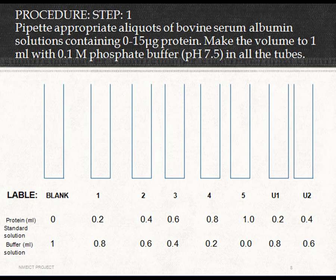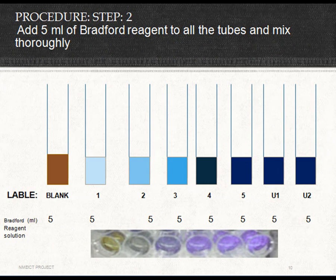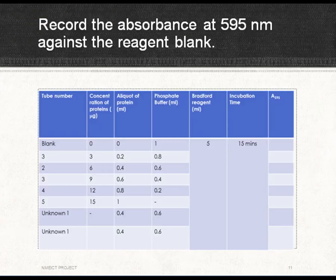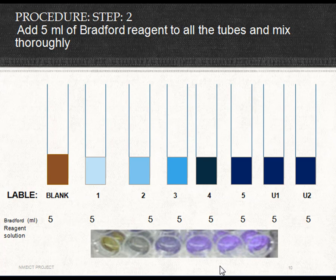Add 5 ml of Bradford reagent to all tubes, mix properly, and take the optical density reading at 595 nm within 15 minutes. Record your data in the table. When observing the test tubes, you will see the blue color intensity increasing in order, as visible in the diagram and the real image shown.